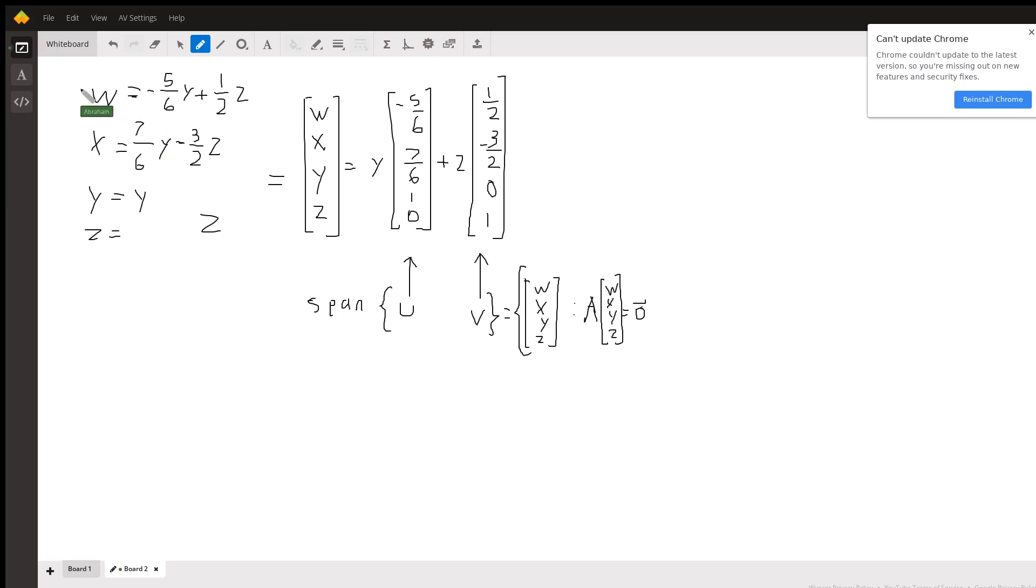And so we can write these two non-free variables in terms of the free variables, and then the free variables are just whatever they are - that's what makes them free, right? So we turn that into a vector equation. Basically, what does an arbitrary w, x, y, z vector look like? And what it looks like is this. This is really the important part that I want to spend some time on.